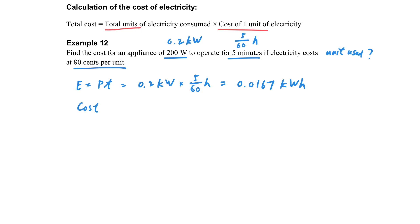We can find the energy used in terms of kilowatt-hours. Because it costs 80 cents per unit, multiply the two numbers together to find the cost used, which is 1.33 cents.